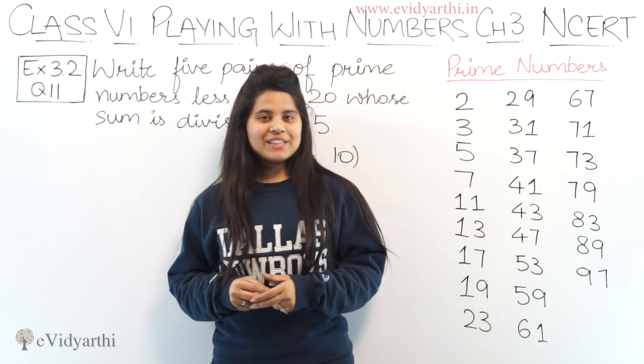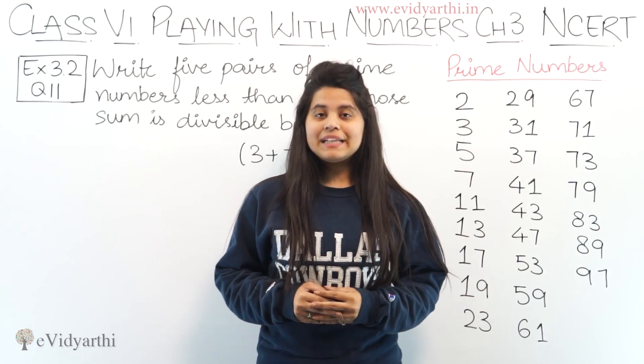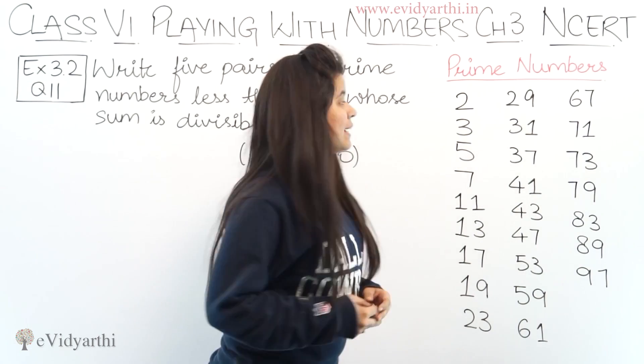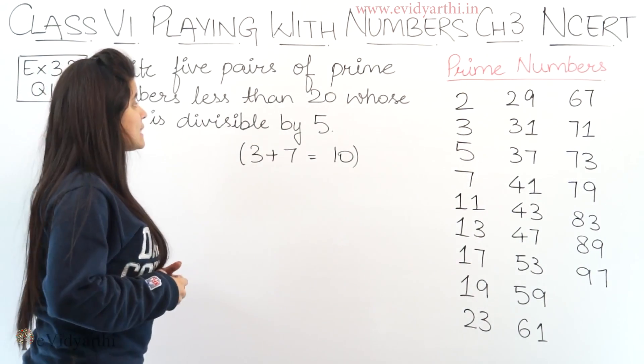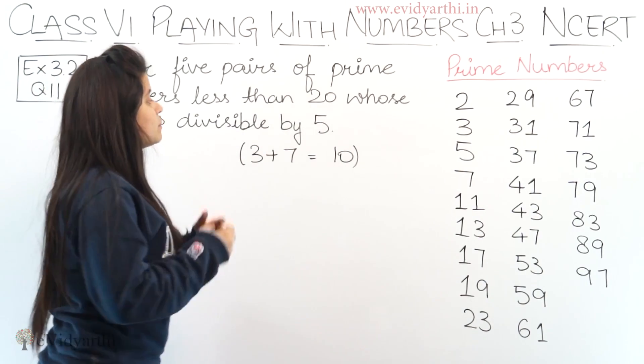Hello guys, this is Manzi from Medi Dhyanthi Church and coming to question number 11 exercise 3.2. So in this question we have like 5 pairs of prime number less than 20 whose sum is divisible by 5.